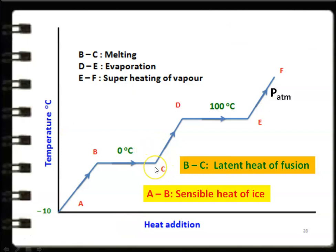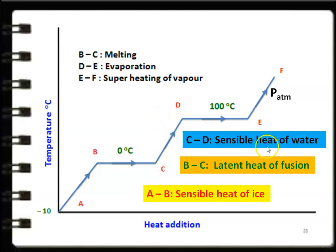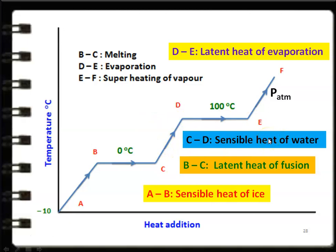At point C, it is completely water at 0°C. Further heat addition raises the water temperature up to point D at 100°C. The heat added between C and D is called the sensible heat of water. Point D is called saturated liquid. At atmospheric pressure, the saturation temperature is 100°C. When heat is added beyond point D, the water starts to evaporate while temperature and pressure remain constant. The heat added between D and E is called the latent heat of evaporation. Point E is called dry saturated vapour.